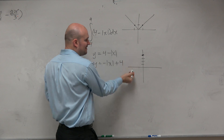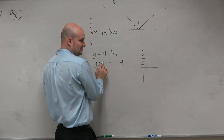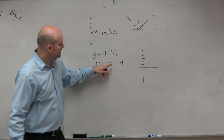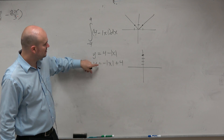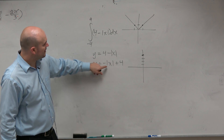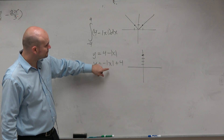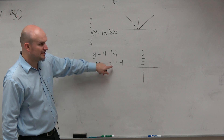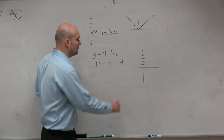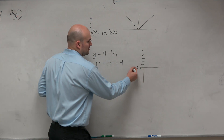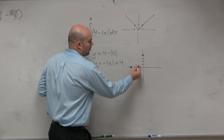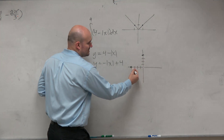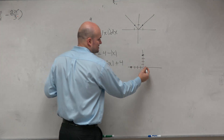Now if I want to find these intercepts, I could use the slope which is still down 1 over 1. I could also figure out when it's equal to 0 by plugging in those values. What you can see is it's going to be equal to 0 at negative 4 and positive 4. Or you could just go down 1 over 1 repeatedly and get the same result.